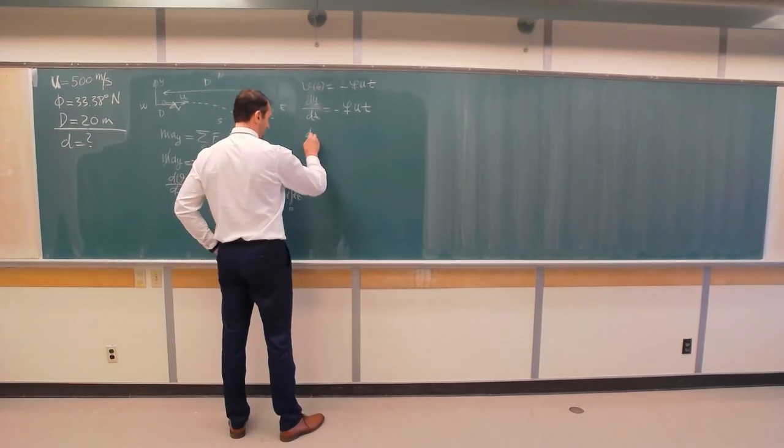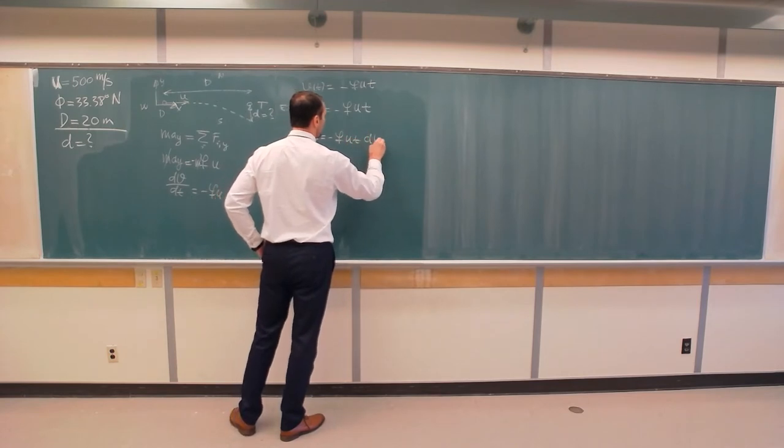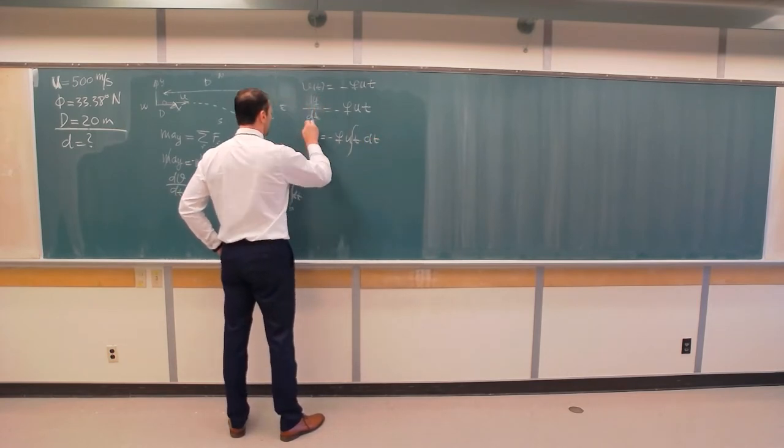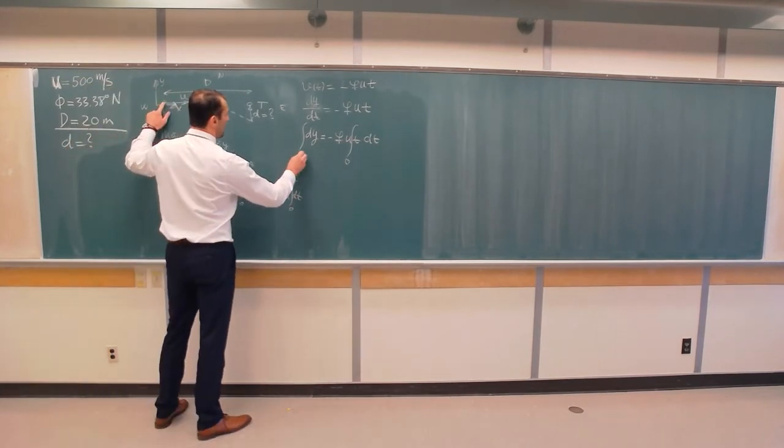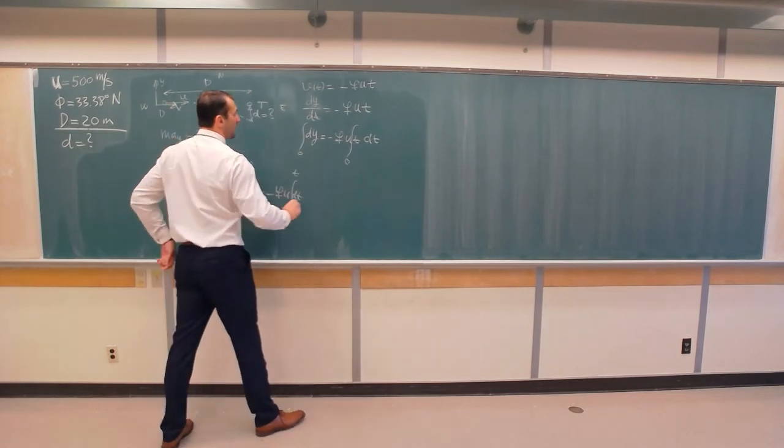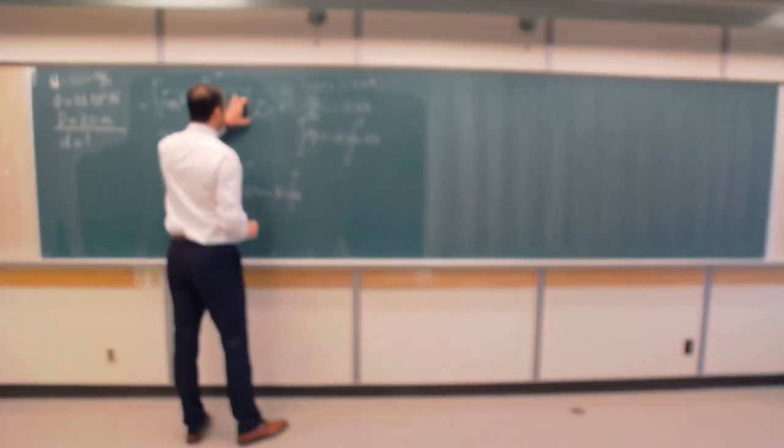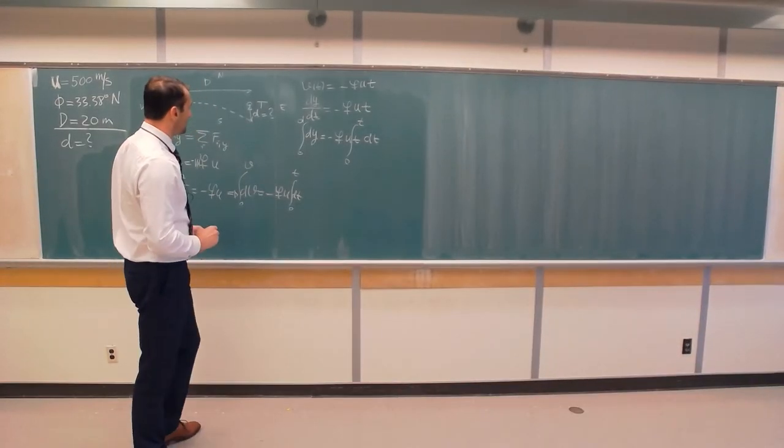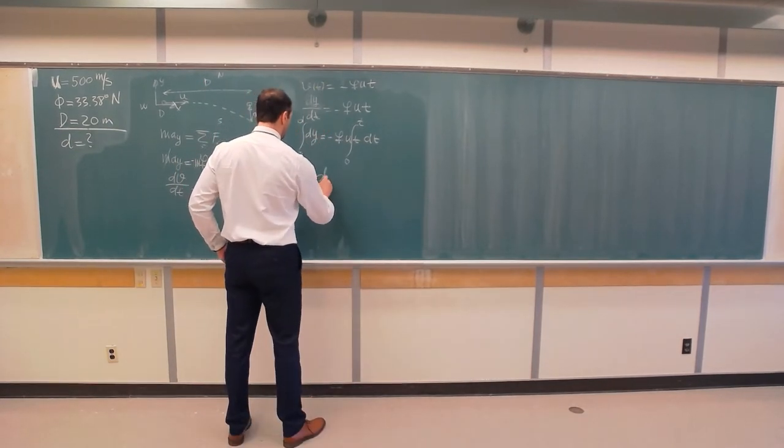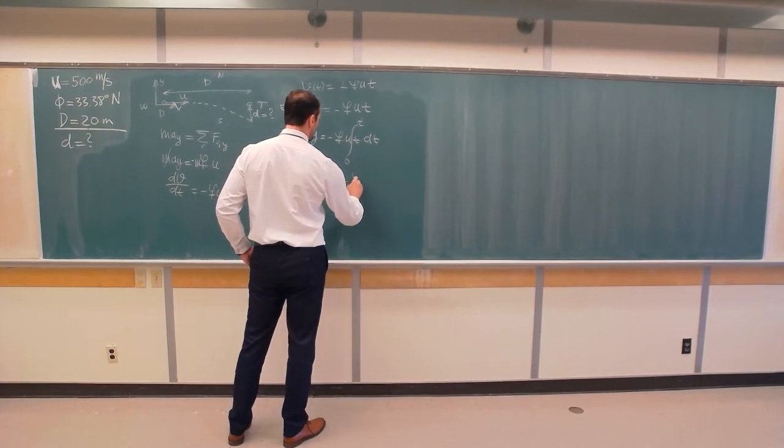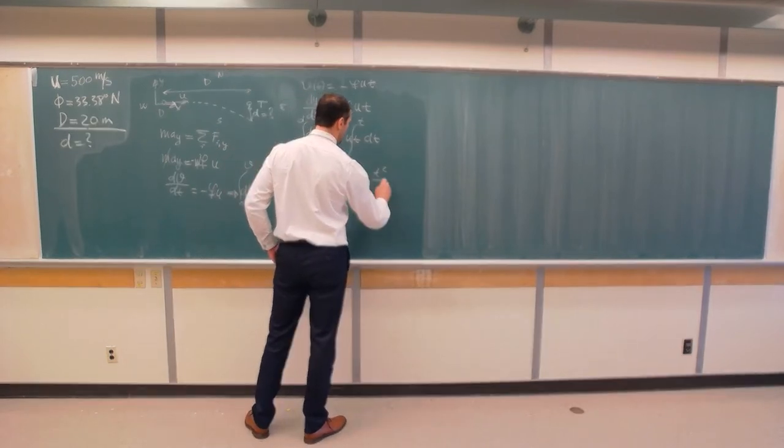But I am not interested in v. I am interested in this displacement d. But I can rewrite this as a derivative of displacement in the y direction, minus FUt. So therefore, dY is equal to minus FUt dt, and I integrate this. Again, I start from t equals 0 when the bullet was fired and the y component was 0, and I go to time t now over here, and displacement is d—this displacement that I am interested in.